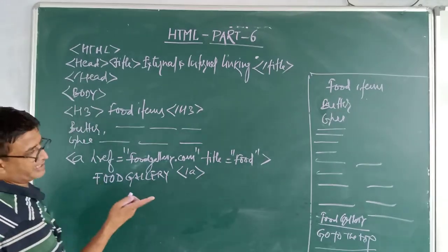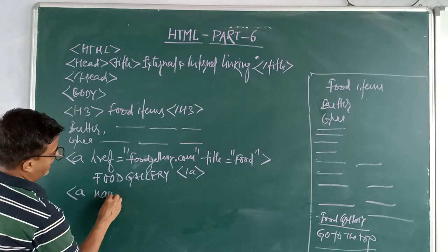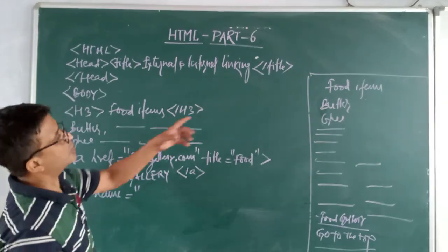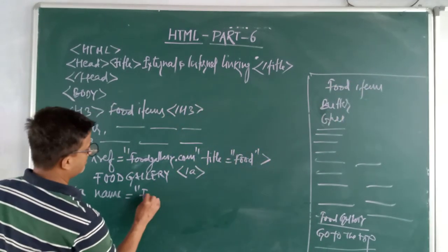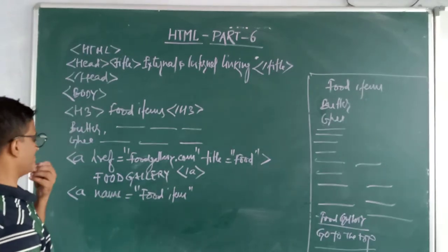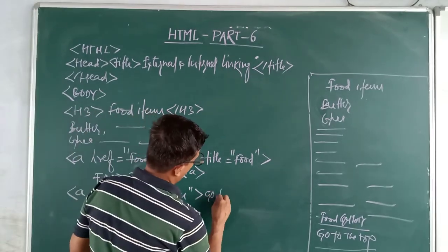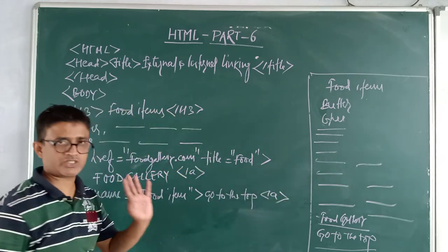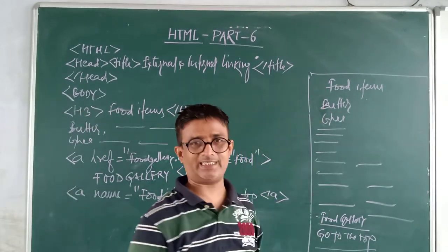Now for internal — 'Go to the Top'. Write the anchor tag, then put the name attribute equal to your target, for example 'food item' — this is the portion you want to navigate to. Close the anchor tag and write 'Go to the Top', then close the anchor tag. You have now created both the food gallery external link and the go-to-top internal link in your coding.